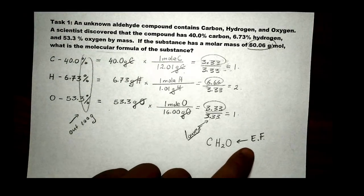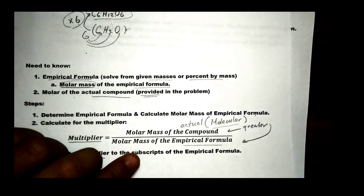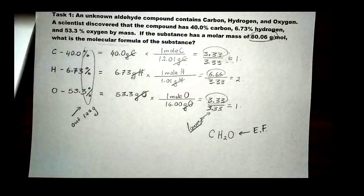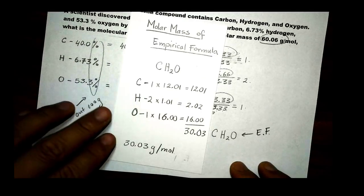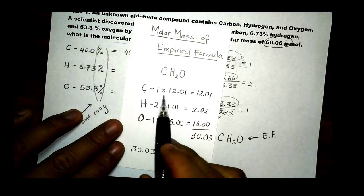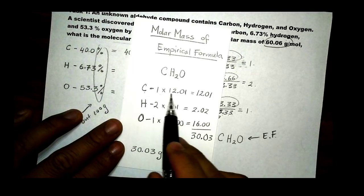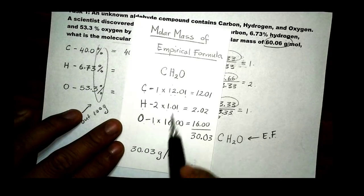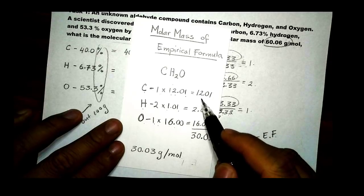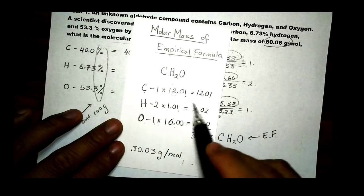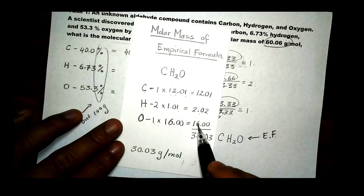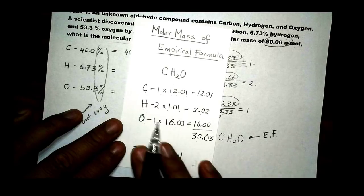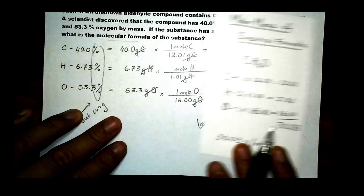Now that we have the empirical formula, the next step is to find its molar mass using the periodic table. For carbon: 1 × 12.01. For hydrogen: 2 × 1.01. For oxygen: 1 × 16.00. Adding these together gives us 30.03 g/mol as the molar mass of the empirical formula.